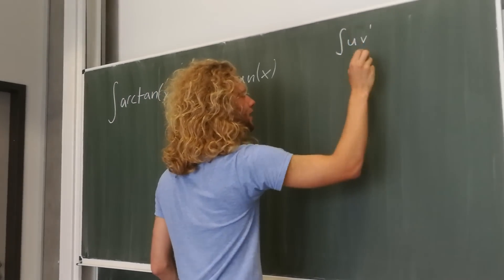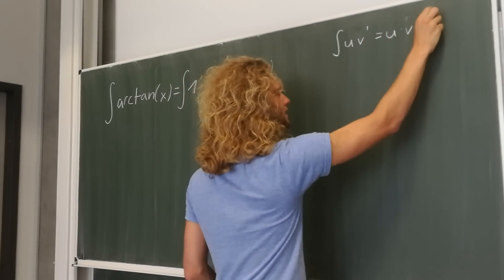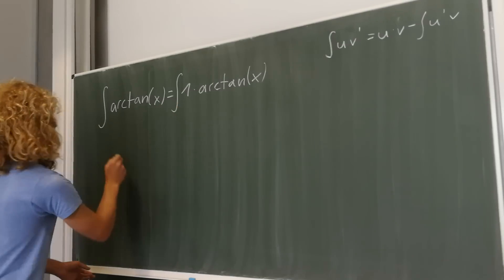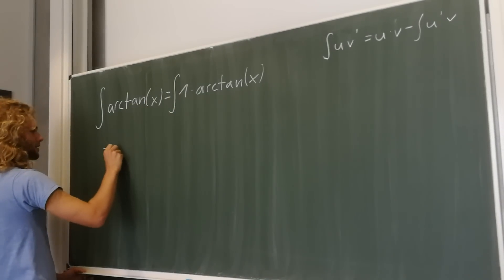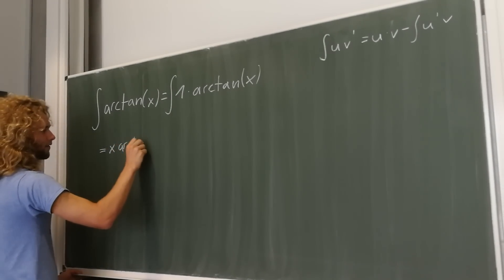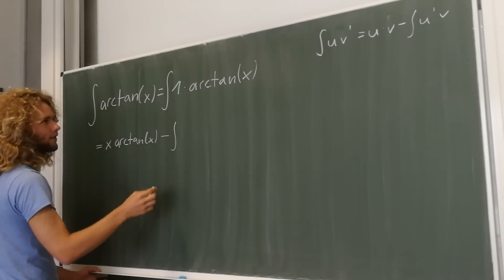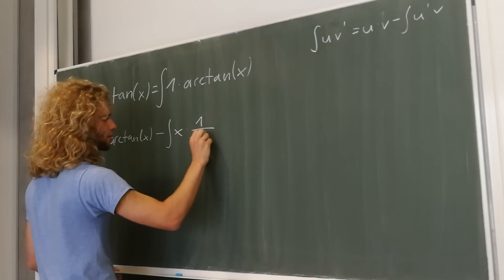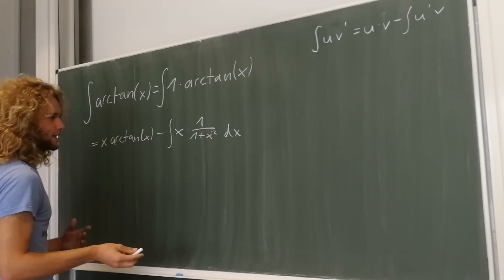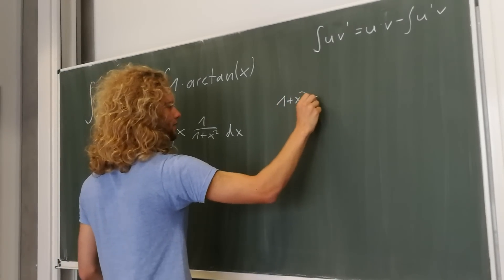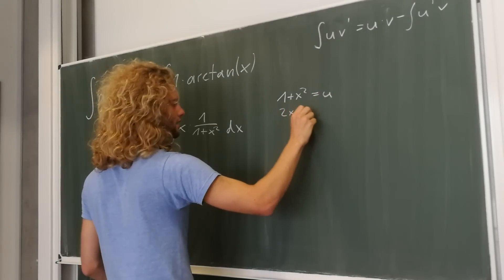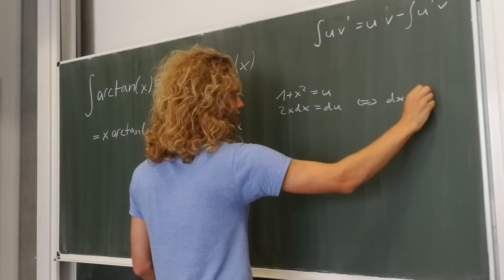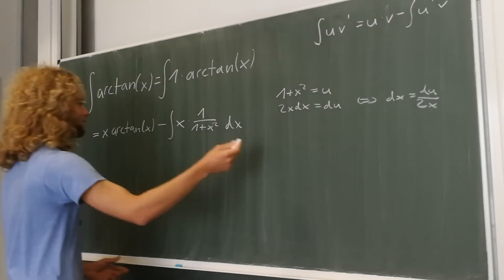Now let's plug this new information in. We know the integration by parts formula: integral of u times v differentiated equals u times v minus the integral of u differentiated times v. So our integral equals x times arctan(x) minus the integral of x times the differentiation of arctan(x), which is 1 over (1 plus x squared) dx. Now let's introduce a substitution: let u = 1 plus x squared, so du = 2x dx, therefore dx = du over 2x.